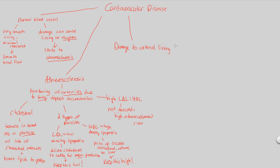But let's look at what happens if you have a damage to the arterial lining. This directly results in a process known as inflammation. Inflammation, generally speaking, is the way that the body reacts to injury. Whenever injury occurs, inflammation almost always ensues right after. This is the body's reaction to an injury.